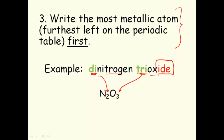The element that's the furthest left on the periodic table is the one that's written first. And that's why nitrogen is written first and the oxygen is written second.